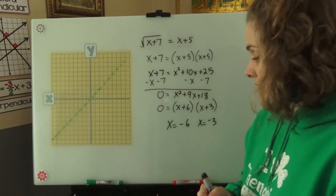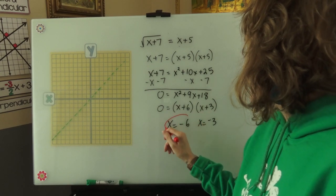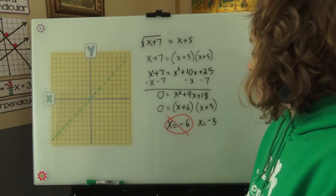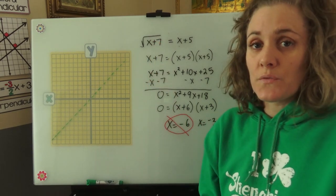The extraneous solution is this negative 6. This one we're going to cross out because that's the one that won't make the equation true if we plugged it back in.